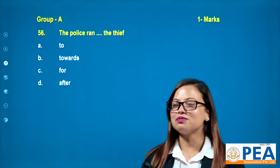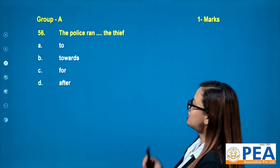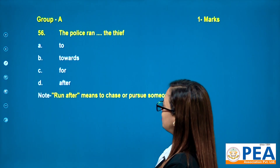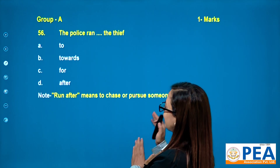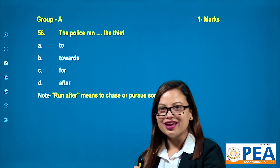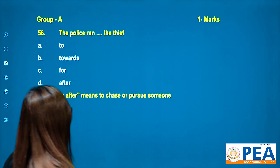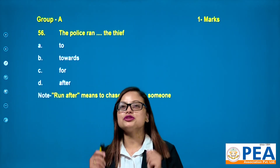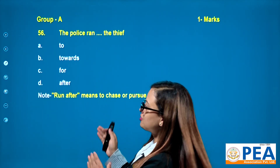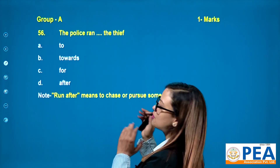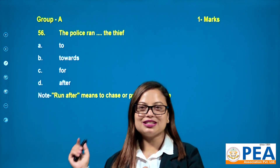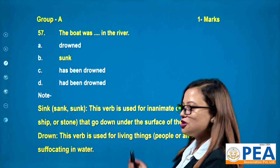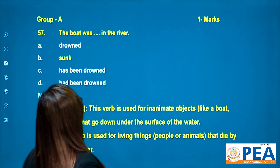Question number 56: 'The police ran ___ the thief.' Options include 'towards' and 'after'. The correct answer is 'after' — the police ran after the thief. If you are chasing or pursuing someone, you use 'after' after the word 'ran'.